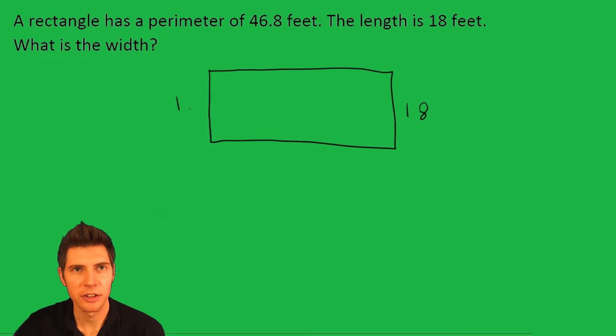We'll call this the length, so we know it's 18 feet here and here. This is the width, the unknown. And we know the whole thing, the perimeter, is equal to 46.8.